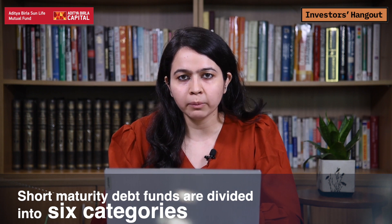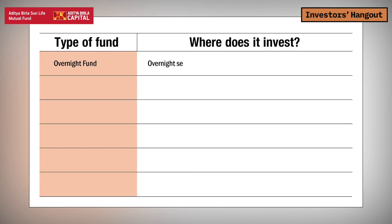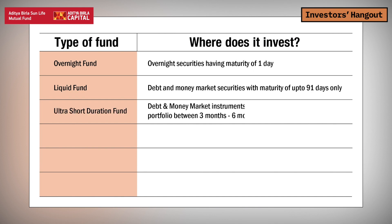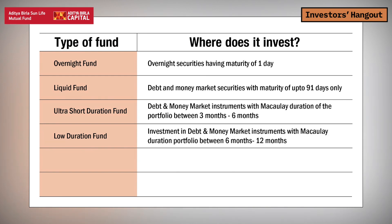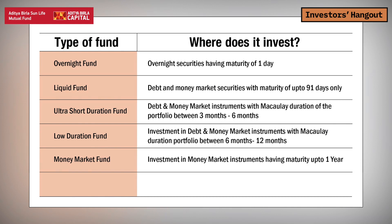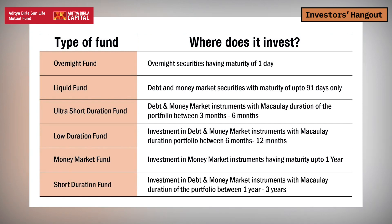Starting with overnight funds — as the name suggests, they invest in securities with a maturity of up to one day. For liquid funds, it's a maturity of up to three months. Ultra short duration funds can invest across the debt instrument spectrum but must maintain an overall portfolio duration of three to six months. The duration limit for a low duration fund is six to twelve months. Money market funds invest in money market instruments of up to one year maturity. The short duration category has a mandate to invest across debt instruments and maintain a portfolio duration of one to three years.